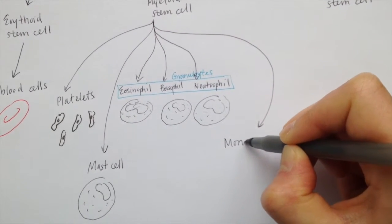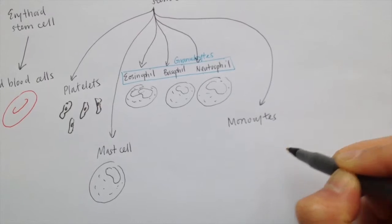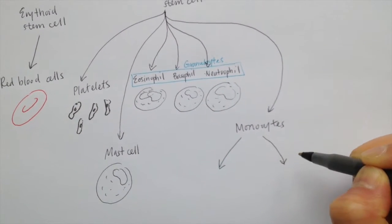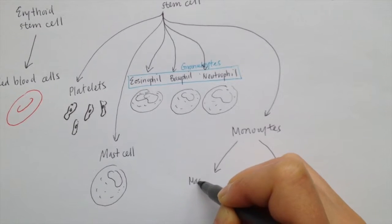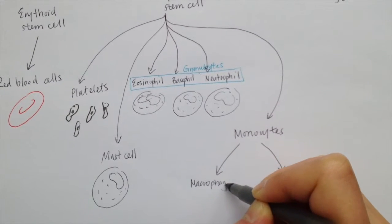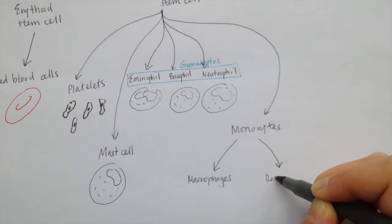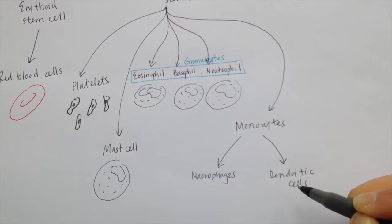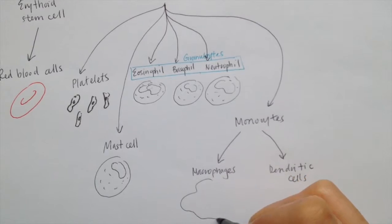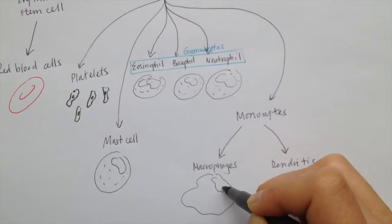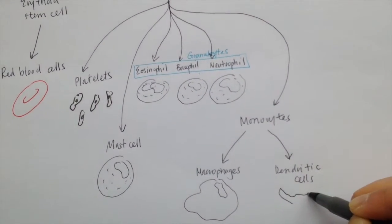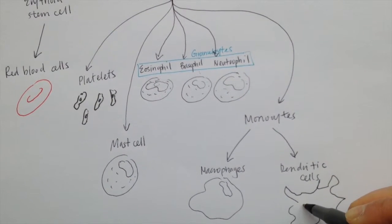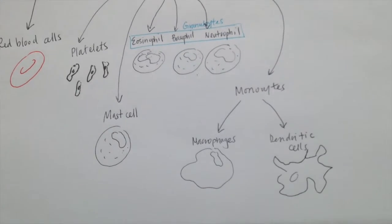Monocytes will also arise from the myeloid stem cell, but the monocytes will differentiate into two different types of cells called macrophages and dendritic cells. Macrophages are large phagocytic cells. Dendritic cells are named so because they look like they have dendrites emanating from them, and they detect and phagocytose pathogens. Once they phagocytose the pathogen, they're able to present the antigen on their surface and present it to lymphocytes in the specific immune system.